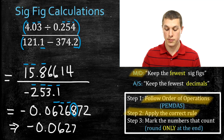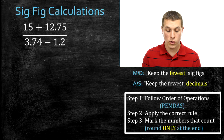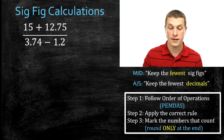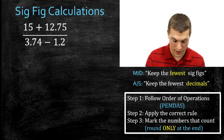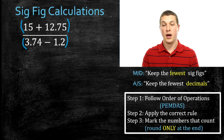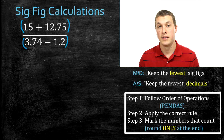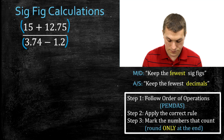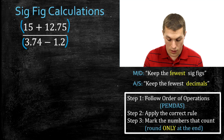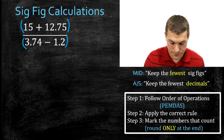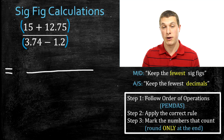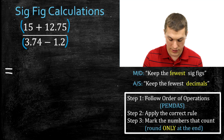So now we have two practice examples where we combined these operations. Let's do one more. This one has the same dividing fraction line. Remember, whenever we see that line separating what's on top and what's on the bottom, it's like there are parentheses there. So in step one — follow order of operations — we do parentheses first. I'll resolve the top first.